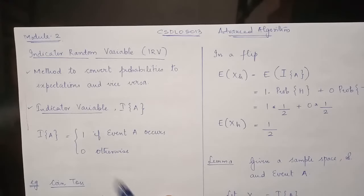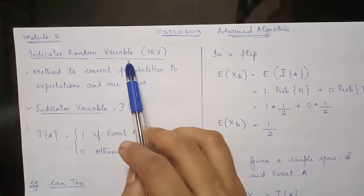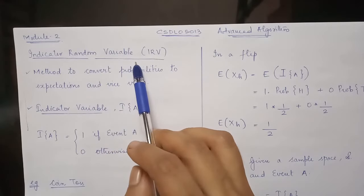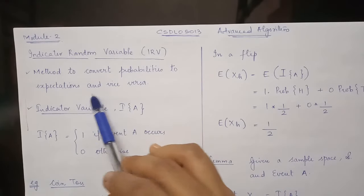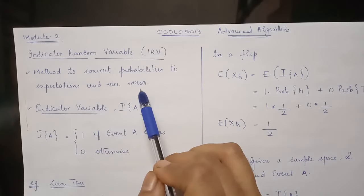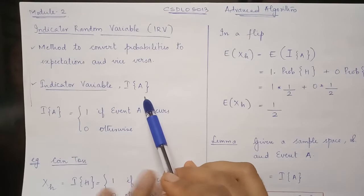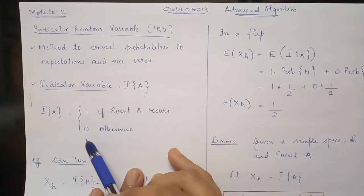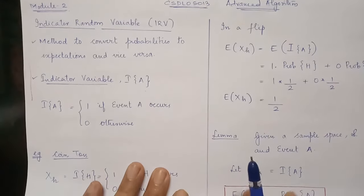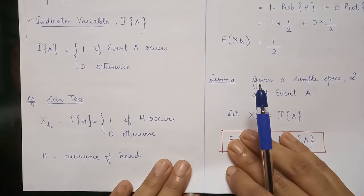Now let us discuss a new term: the Indicator Random Variable (IRV). The indicator random variable helps us convert probabilities to expectations and vice versa. It is denoted as I(E), where I(E) equals 1 if event A occurs and 0 otherwise. Let's take the example of a coin toss to understand indicator random variables in detail.